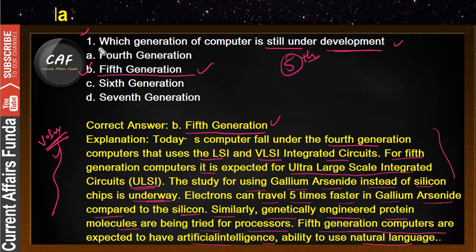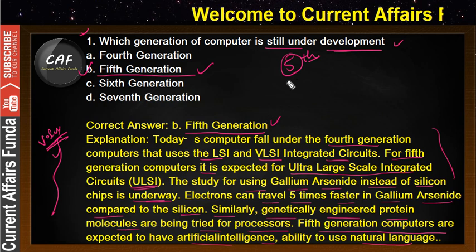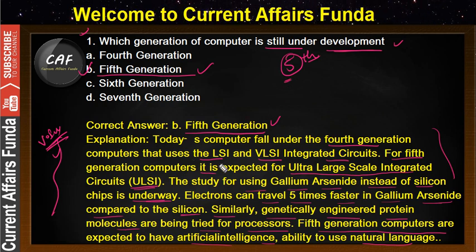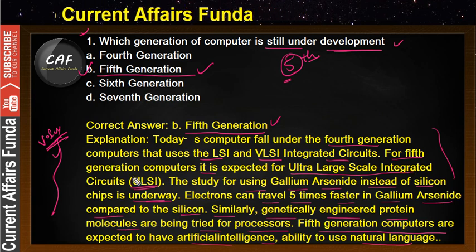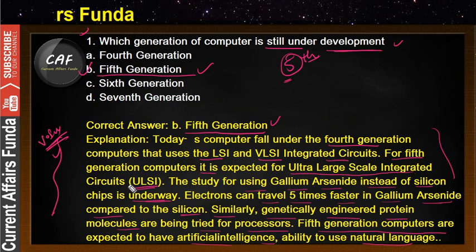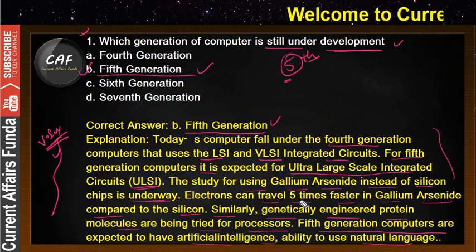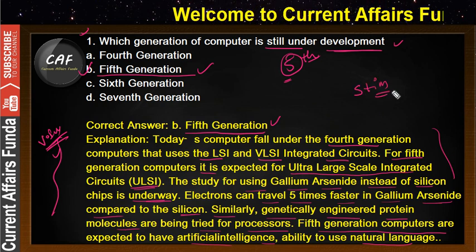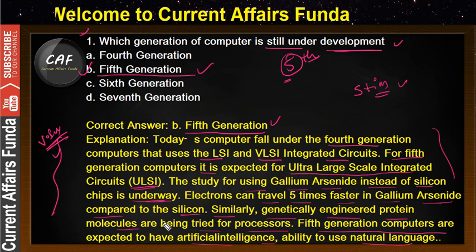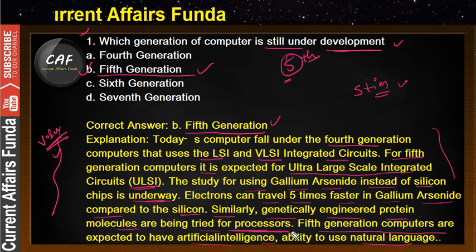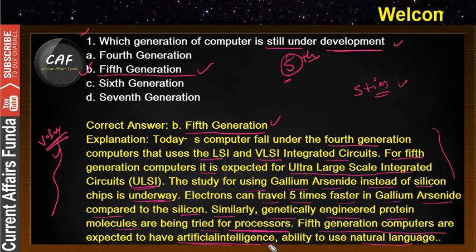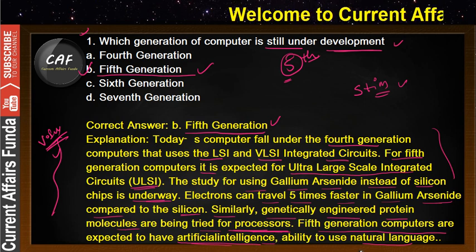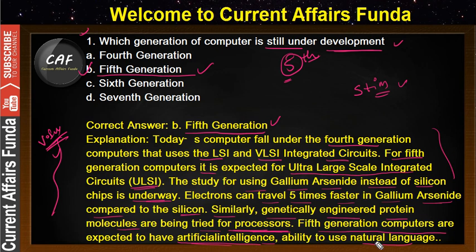To summarize: the fourth generation is currently running and the fifth generation is coming. VLSI and LSI integrated circuits are used in the fourth generation. For the fifth generation, ultra large scale integrated circuits are used, and gallium arsenide is used instead of silicon chips because electrons can run five times faster. Faster electrons mean faster processor operations. Fifth generation computers are expected to have artificial intelligence and the ability to use natural language.